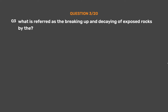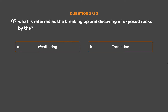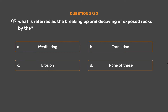Question No. 3. What is referred to as the breaking up and decaying of exposed rocks? Option A: Weathering. Option B: Formation. Option C: Erosion. Option D: None of these. The correct answer is Option A: Weathering.